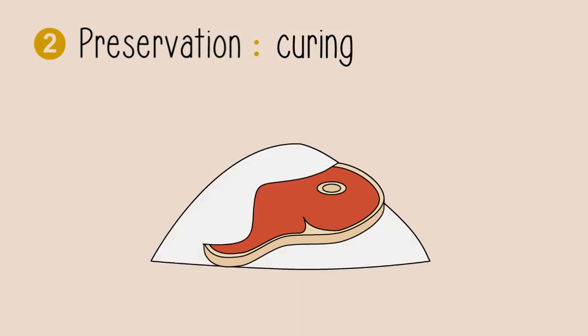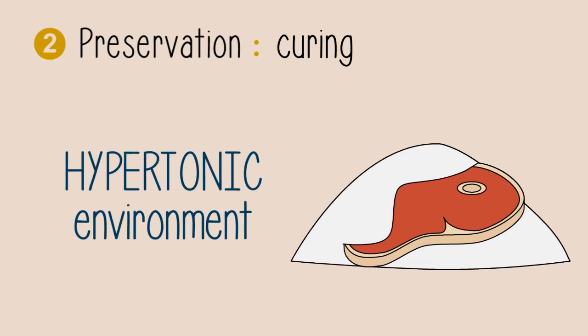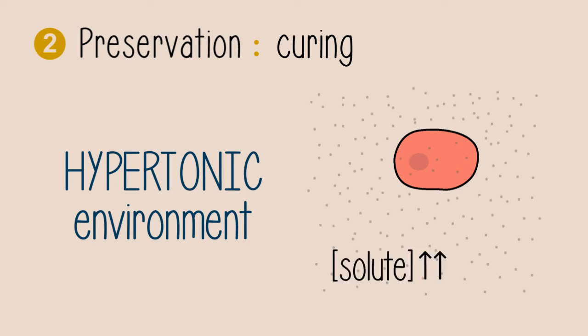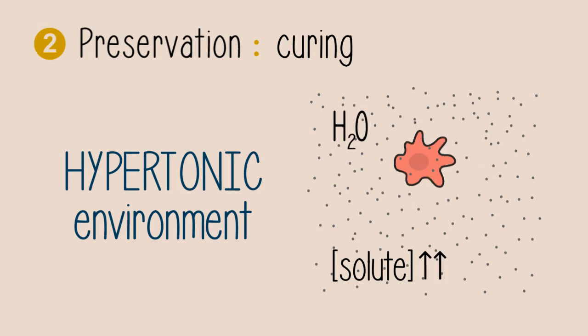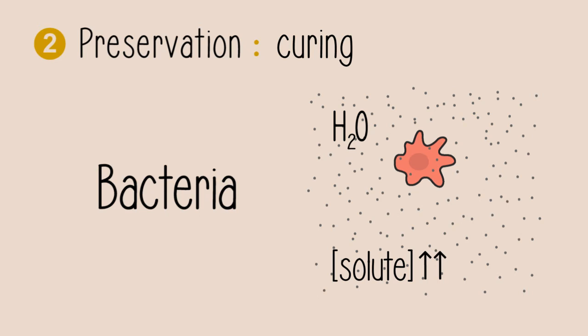If we rubbed that piece of meat with a lot of salt, a hypertonic environment is created. This means that there is a higher solute concentration outside of cells rather than inside. Osmotic pressure therefore is increased, which draws water out of cells, including water inside of bacteria living on and inside that piece of meat. These bacteria are killed and the meat is preserved.